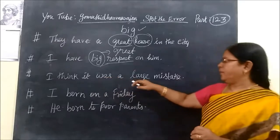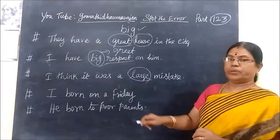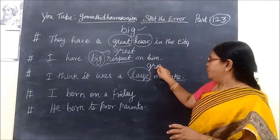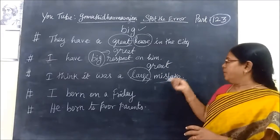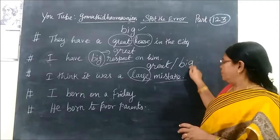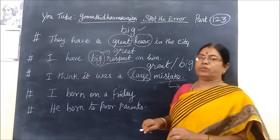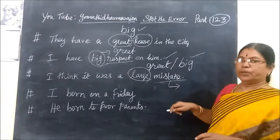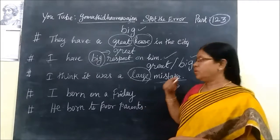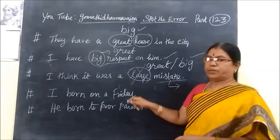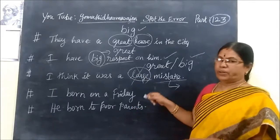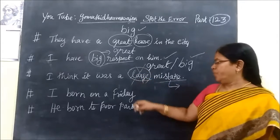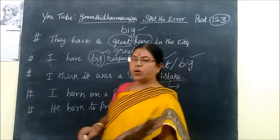Third one: 'I think it was a large mistake.' Here 'mistake' is an abstract noun. For abstract nouns we use 'great,' not 'large.' So: 'a great mistake.' For countable abstract nouns you can also use 'big.' But 'large' should not be used for abstract nouns, whether countable or uncountable.